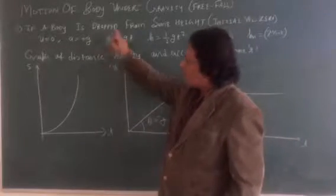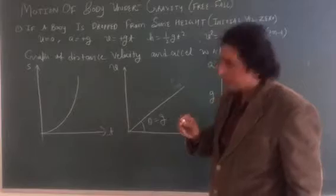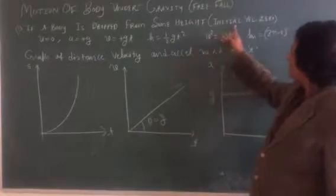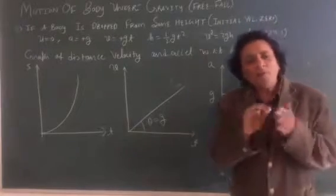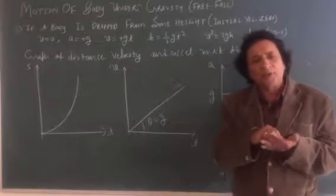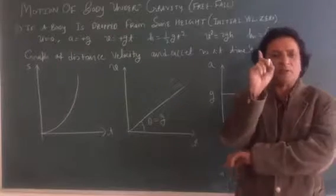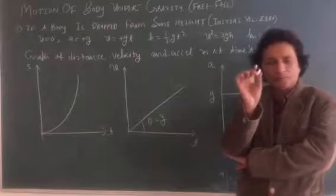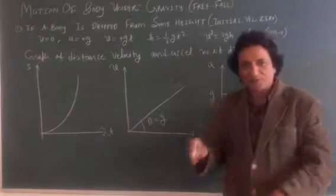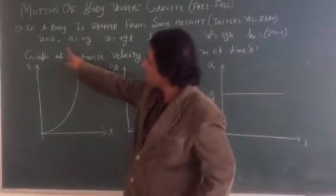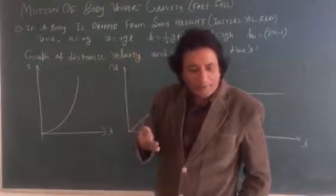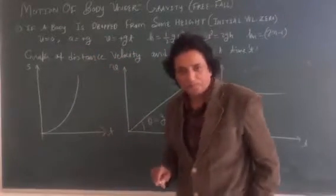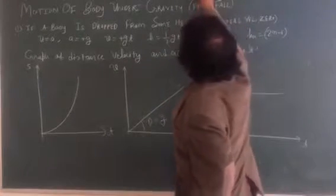If a body is dropped from some height, initial velocity is zero. Whenever we say dropped, it means initial velocity is zero. When the body is falling, take acceleration as plus g.